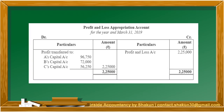Let's look at the Profit and Loss Appropriation Account. The profit of ₹2,25,000 is shown on the credit side. On the debit side, the profits are distributed: C, as a partner, is given ₹56,250; B's share remains ₹72,000 as he is not bearing the deficiency; and from A's profit, the deficiency of ₹11,250 is subtracted, resulting in A's share of profit being ₹96,750.